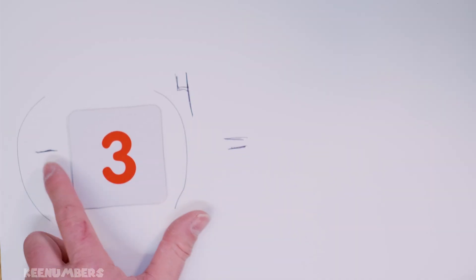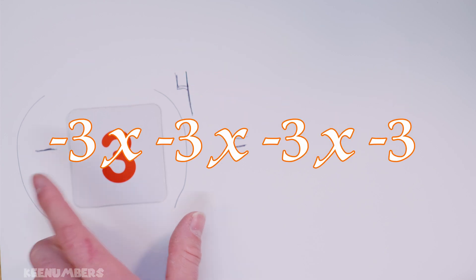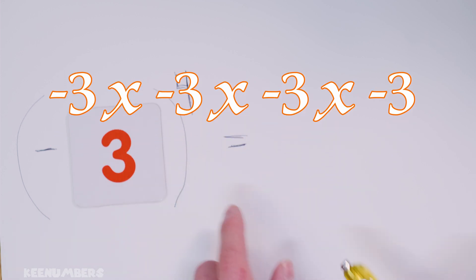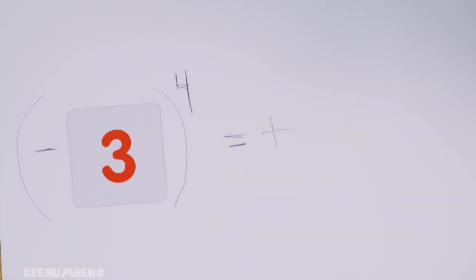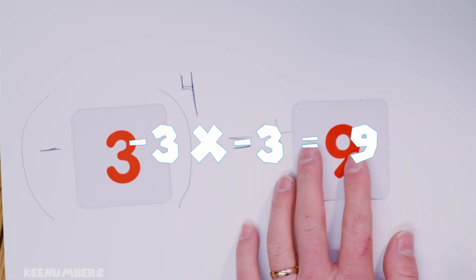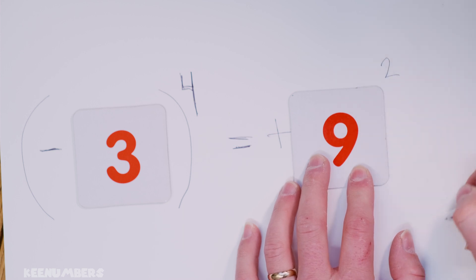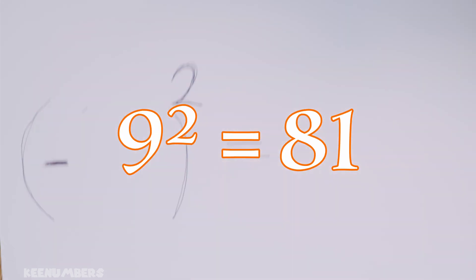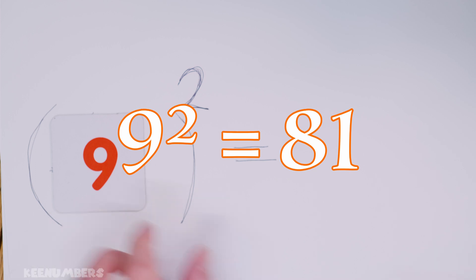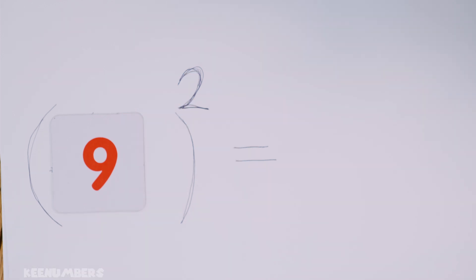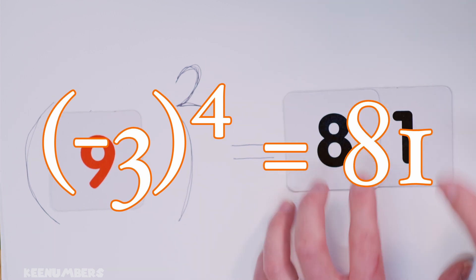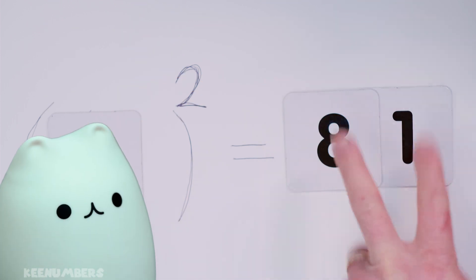Let's look at one more — negative three to the fourth power. Negative times negative is positive, so when you have a negative times a negative times a negative times a negative, that's a positive times a positive. You're going to get a positive number. Three by three is nine, and three by three is nine again, so you're really talking about nine squared at this point. Nine squared is simply equal to 81. So negative three to the fourth power is 81.